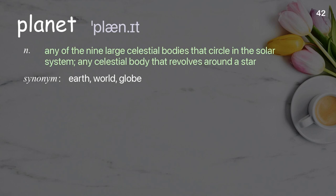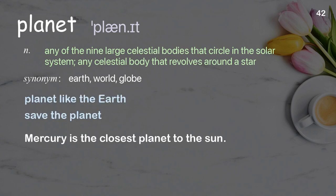Planet. Any of the nine large celestial bodies that circle in the solar system; any celestial body that revolves around a star. Examples: planet like the earth, save the planet. Mercury is the closest planet to the sun.